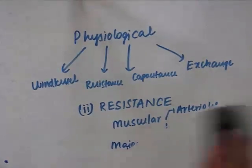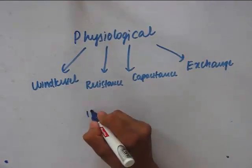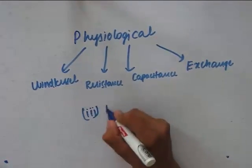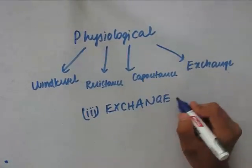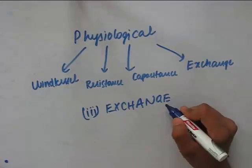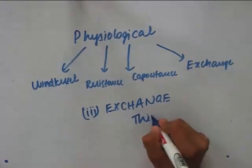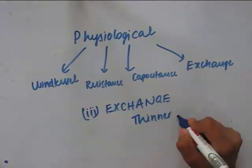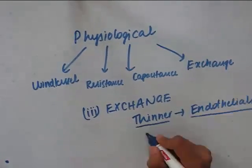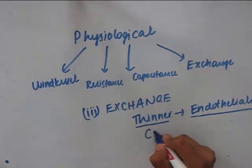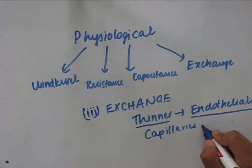Next, let's study about the third category of vessels — the exchange vessels. As the name suggests, they exchange something. For there to be any exchange, the layer between the vessels should be a thinner one. For this, the vessels should have only the endothelial layer, and this criteria is fulfilled by capillaries. These are therefore also called exchange vessels.